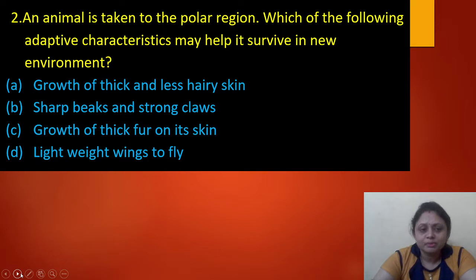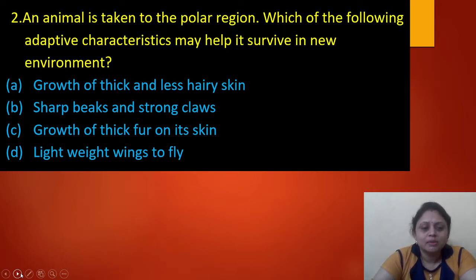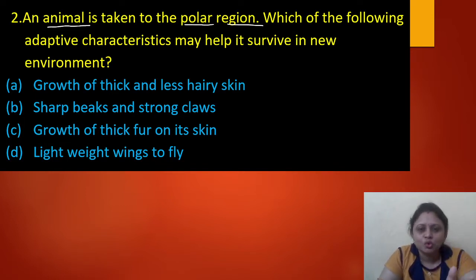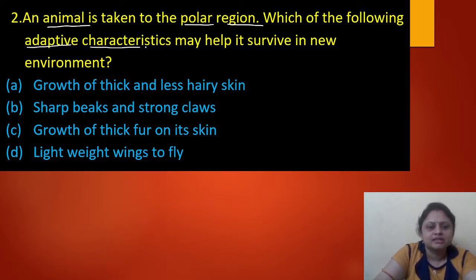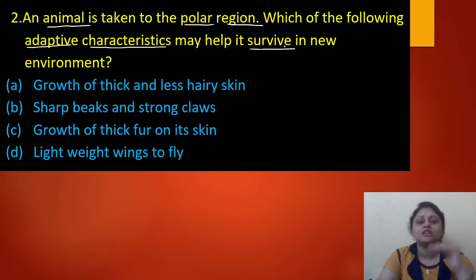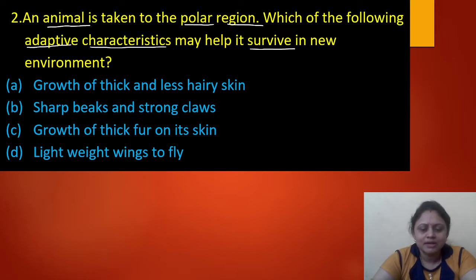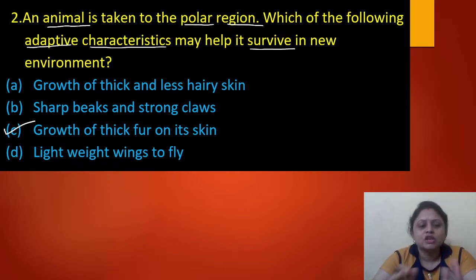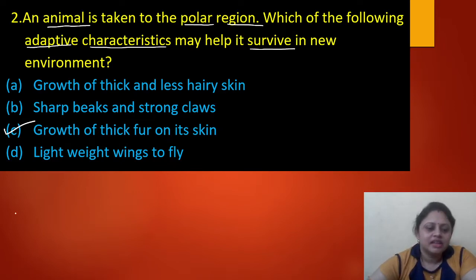Next question: an animal is taken to the polar region. Which of the following adaptive characteristics may help it survive in the new environment? Option A: growth of thick and less hairy skin. Option B: soft wings and strong claws. Option C: growth of thick fur on its skin. Option D: light wings to fly. In the polar region it is very cold, so the answer is option C — growth of thick fur on its skin — which helps them survive in cold regions.